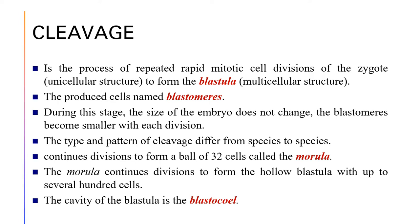Eventually, a unicellular structure will then be developed into a multicellular structure. The produced cells are named blastomeres, and during this stage, the size of the embryo does not change and the blastomeres become smaller with each division. The type and pattern of cleavage differ from species to species, and it continues to form a ball of 32 cells called the morula. The morula continues its division to form the hollow blastula with up to several hundred cells, and then eventually there will be the development of a cavity called a blastocel.